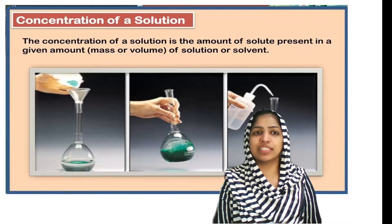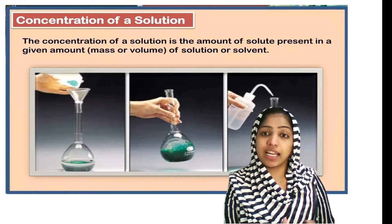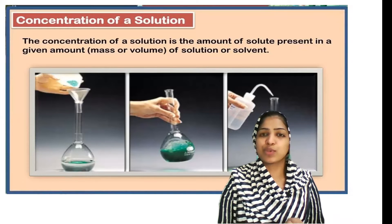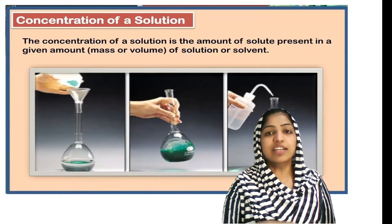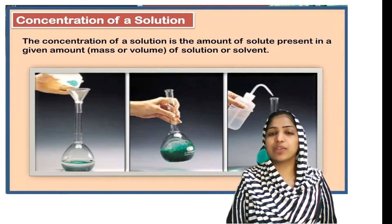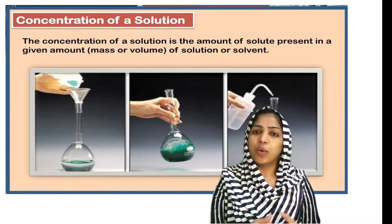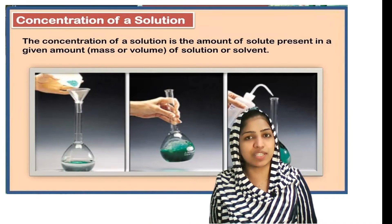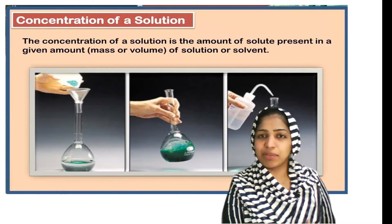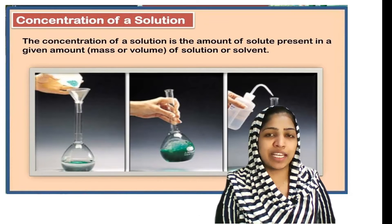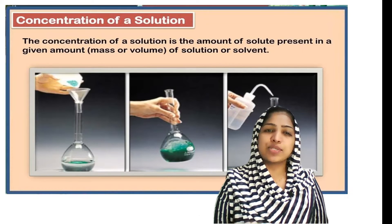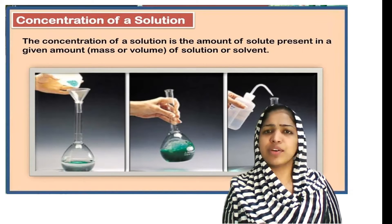How do we know how the concentration of a solution is? The solution is a mixture of solute and solvent. Solute mixed in a solvent makes a solution. It is a homogeneous mixture. Concentration is the amount of solute to the amount of solution or solvent.